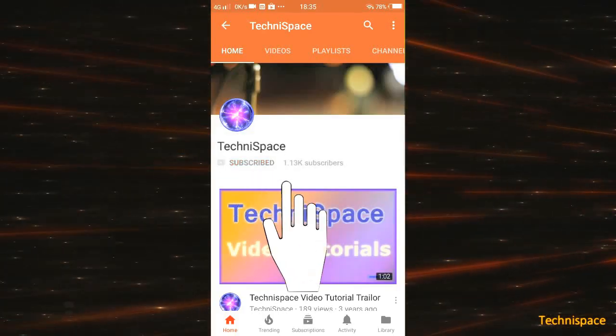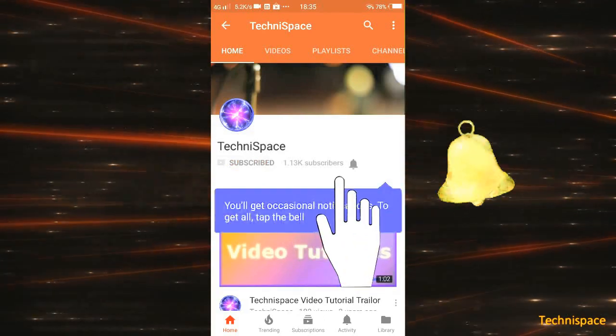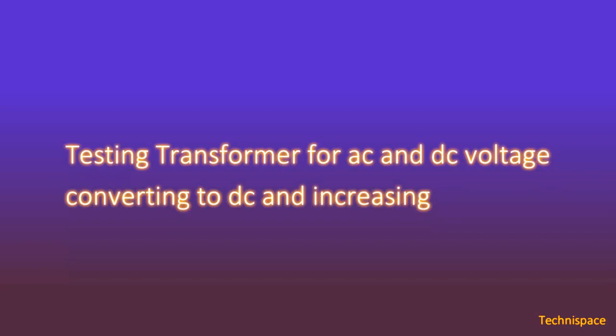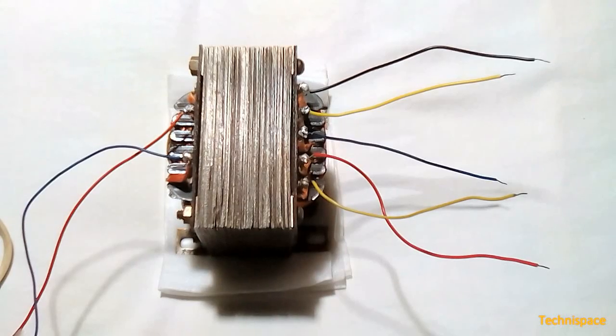Subscribe to our channel and press the bell icon to get early notification of our latest video. Hi friends, in this video we will see how we can detect AC or DC voltage coming from a transformer, convert AC to DC, and increase its voltage.